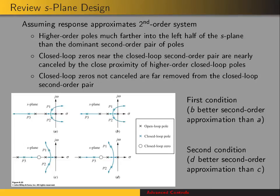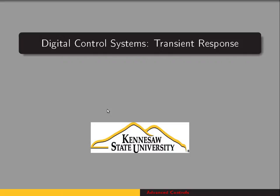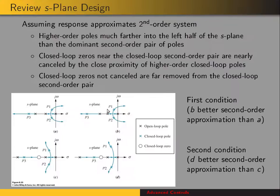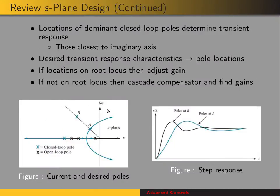This reminds us that whenever we're designing compensators, we're assuming a second-order response, and in order to assume second-order response, the closed-loop system has to be close to a second-order system. It's the dominant closed-loop poles — the ones closest to the imaginary axis — that determine the transient response, assuming a second-order response.